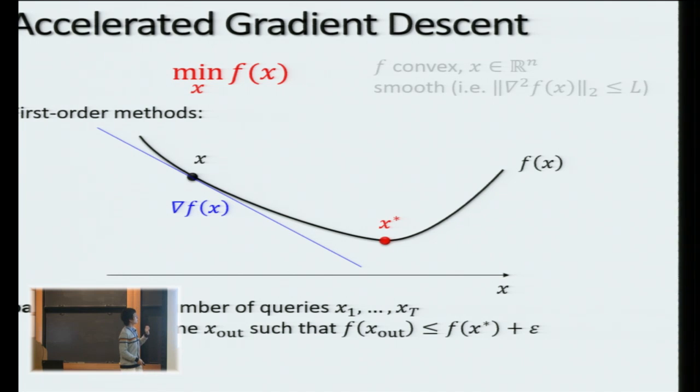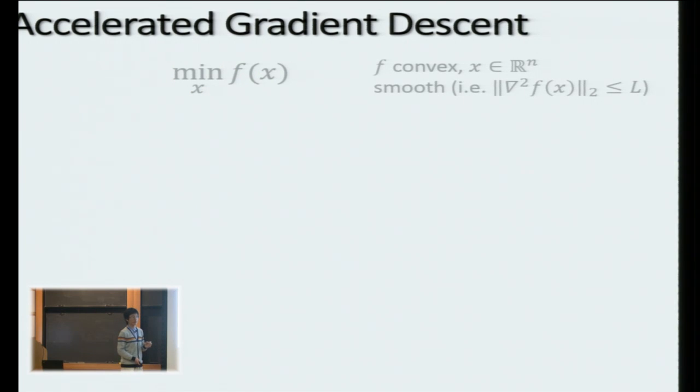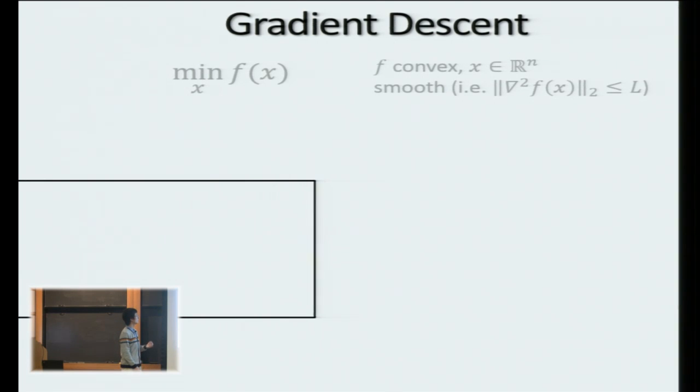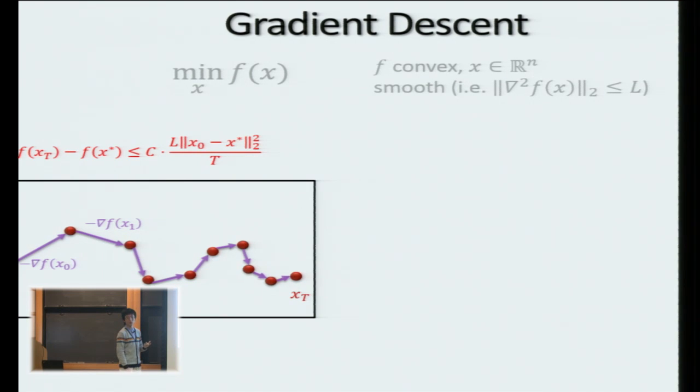Then, what is accelerated gradient descent? If I drop the word accelerated, then everyone knows what it is. That's to go in the direction of the negative gradient of the function, and that could help us to move closer and closer to the minimizer of the function. So mathematically,